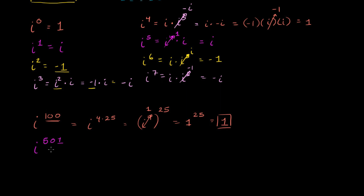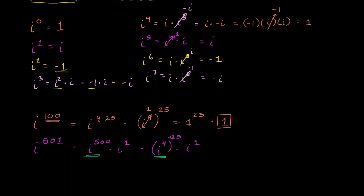What you can do is write this as a product of two numbers — one that is i to a multiple of 4, and one that isn't. So you could rewrite i to the 501st as i to the 500th power times i to the 1st power, since 500 is a multiple of 4. When you have the same base and multiply, you add exponents, giving i to the 501st. i to the 500th equals i to the 4th raised to the 125th power, which is 1 to the 125th, which is 1. So we're just left with i to the 1st, which equals i.